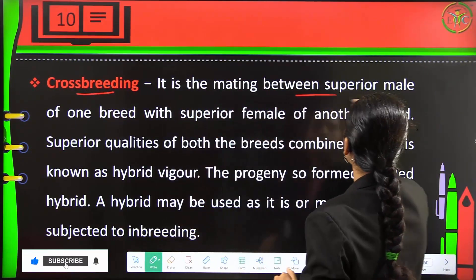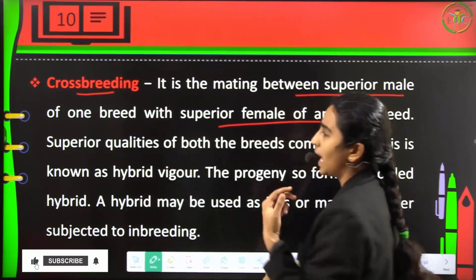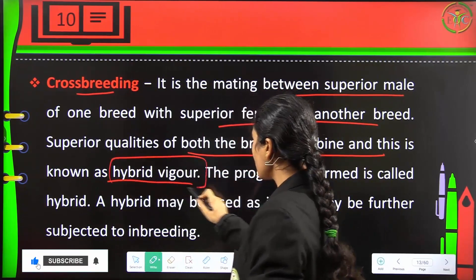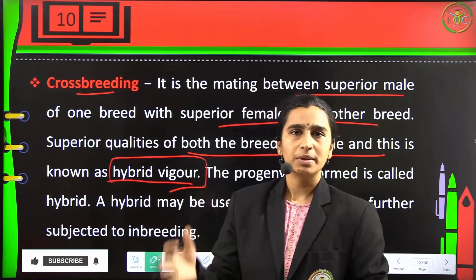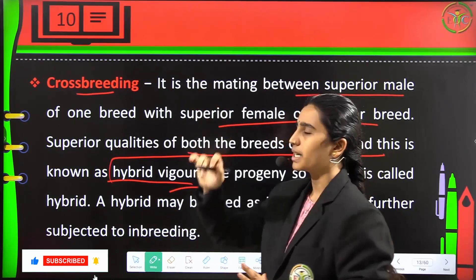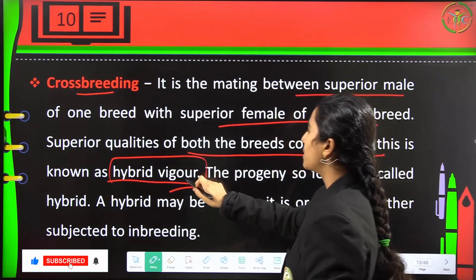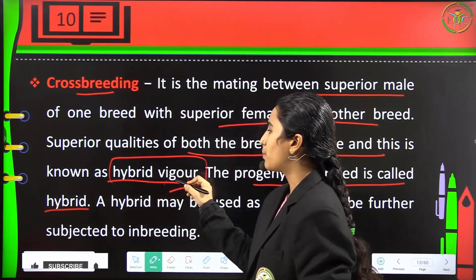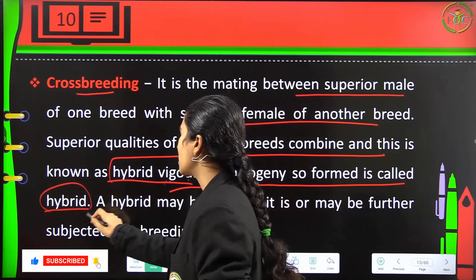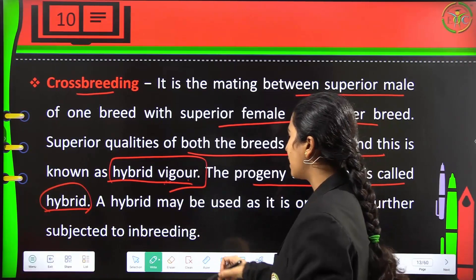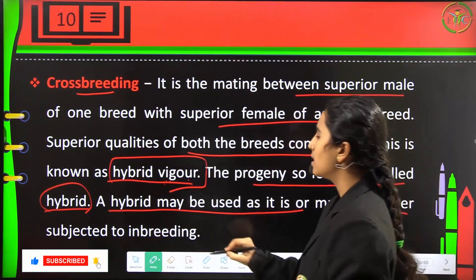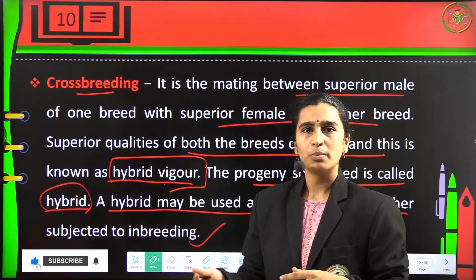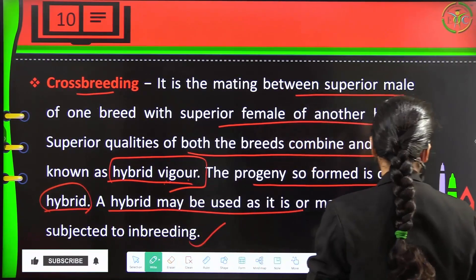Crossbreeding is the mating between a superior male of one breed with a superior female of another breed. The superior qualities of both breeds combine, and this is known as hybrid vigor. The progeny formed is called a hybrid. A hybrid may be used as it is or may be further subjected to inbreeding.